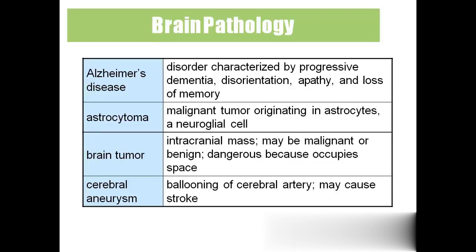Coming to brain pathology: 'Alzheimer's disease' is very common nowadays, usually occurring in people above 60 years of age. It is a disorder with progressive dementia — progressive memory loss — and disorientation. Sometimes they will forget their relatives' names, their wife's or mother's name, and the relationship between them. That is advanced Alzheimer's — apathy and loss of memory will be present.